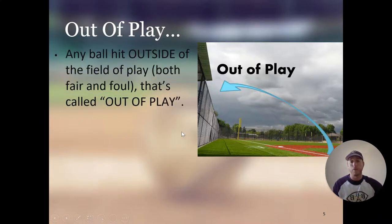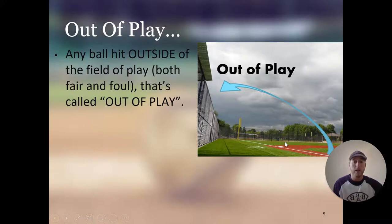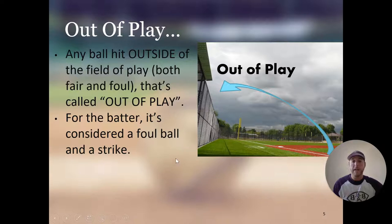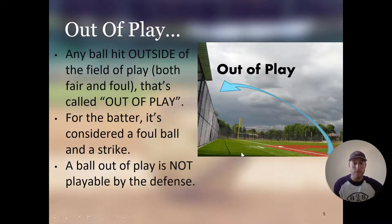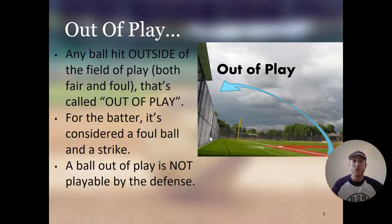Out of play is the last one. Any ball hit outside of the field of play — both fair and foul — is called out of play. So the field of play includes both foul territory and fair territory. In this example, this fence right here — if the ball gets hit from here and goes all the way over and outside of the fence, that's out of play. A ball out of play is not playable by the defense. Foul territory extends from the white line to the fence — all of that green area is in play. If the ball goes outside of the fence, obviously no player can jump the fence, and that would be out of play. The defense cannot play a ball that's out of play.